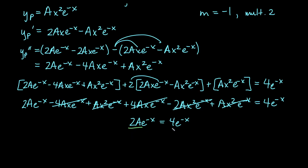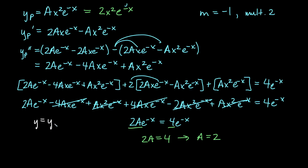Comparing coefficients, 2a equals 4 so a equals 2. Since y sub p was ax squared e to the negative x, we get y sub p equals 2x squared e to the negative x. The general solution is y equals c1 e to the negative x plus c2 x e to the negative x plus 2x squared e to the negative x.